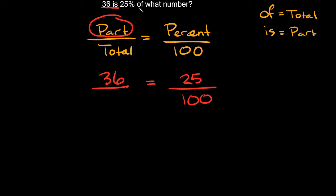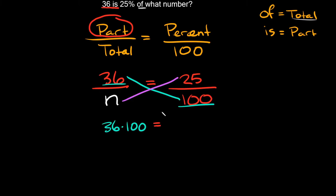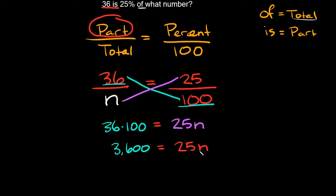'Of what number?' — 'of' means total, but we don't know what number; that's what we're looking for. To solve this proportion, cross multiply: 36 times 100 on one side equals n times 25, or 25n. So 36 times 100 is 3,600, and that equals 25n. To isolate n, divide by 25 on both sides — these cancel out, leaving n equal to 3,600 divided by 25, which equals 144.